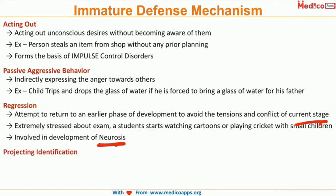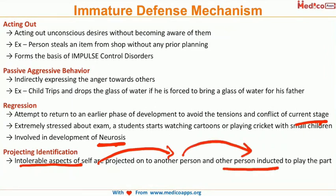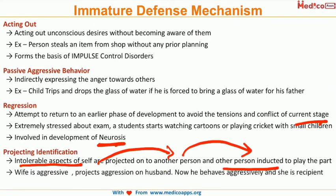The last immature defense mechanism is projective identification. Here, an intolerable aspect of the self is projected onto another person, and that other person is inducted to act and play that part. For example, suppose a wife has a very aggressive personality — she projects her aggressiveness onto her husband, and the husband starts acting and behaving aggressively. This all happens unconsciously. The wife is aggressive, projects onto the husband, the husband acts aggressively, and then the wife becomes the recipient of the aggression. This is called projective identification.